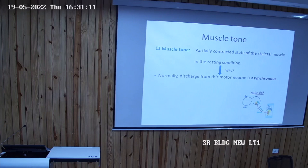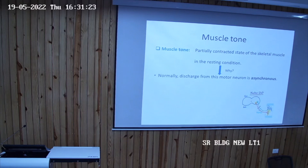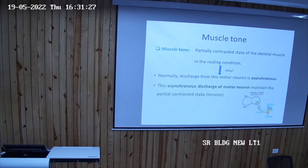So normally the discharge from this motor unit, motor neuron is asynchronous. Suppose this is contracting, this will be relaxing. It's not that at one time all motor units are involved. Okay? That is the asynchronous discharge.